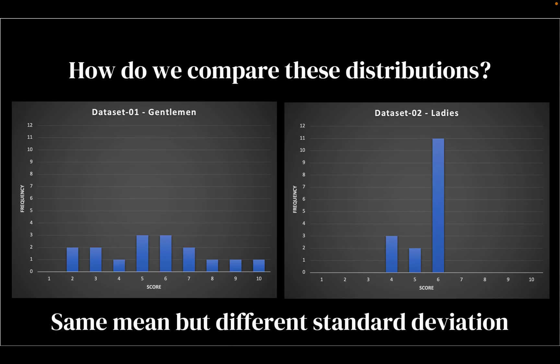Consider this example where on the left-hand side we've got a data set that looks pretty dispersed, whereas on the right-hand side the data is pretty much concentrated around a particular value. In both data sets, the average value is 5.5.